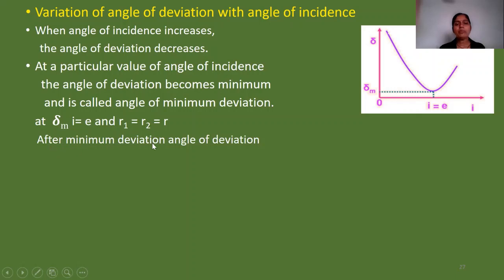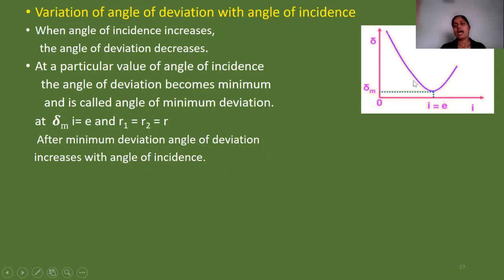After minimum deviation, deviation increases again as angle of incidence increases. So δM is the minimum deviation point.